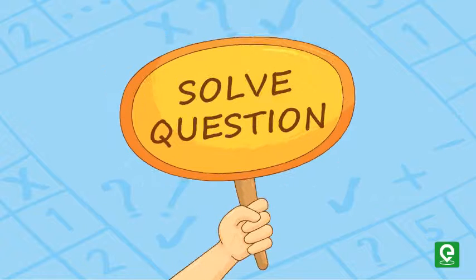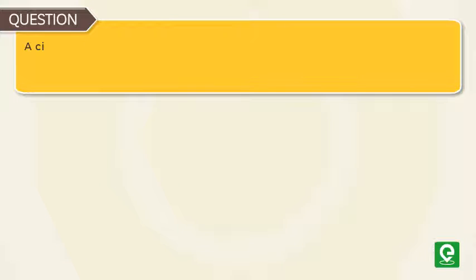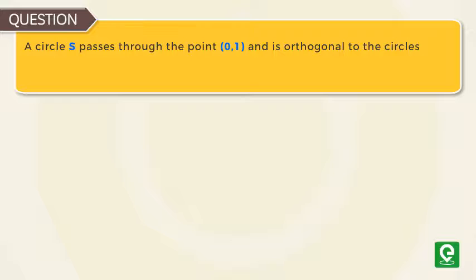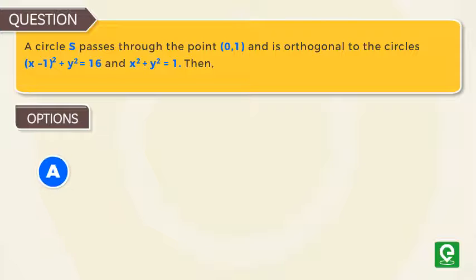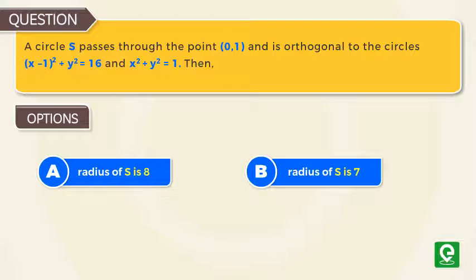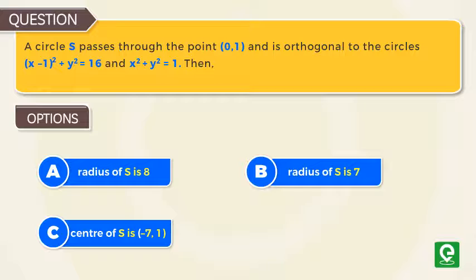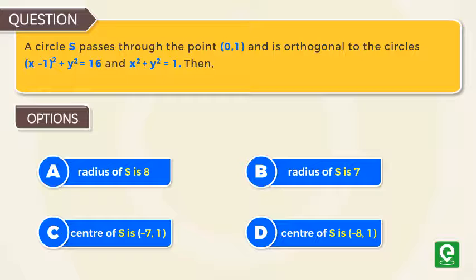Let us solve a question on this newly learned concept. Question: A circle S passes through the point (0, 1) and is orthogonal to the circles (x - 1)² + y² = 16 and x² + y² = 1. Then the options are: A) radius of S is 8, B) radius of S is 7, C) center of S is (-7, 1), and D) center of S is (-8, 1). This question was asked in IIT JEE Advanced 2014 exam.